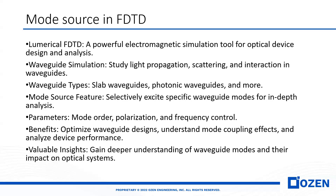For the waveguide simulation, we use numerical FDTD to study the light propagation, scattering, and interaction in the waveguide. We can study different types of waveguide, like slab waveguide, photonic crystal waveguide, photonic waveguide, ring modulators, and we can calculate different parameters like transmission and reflection versus wavelengths.